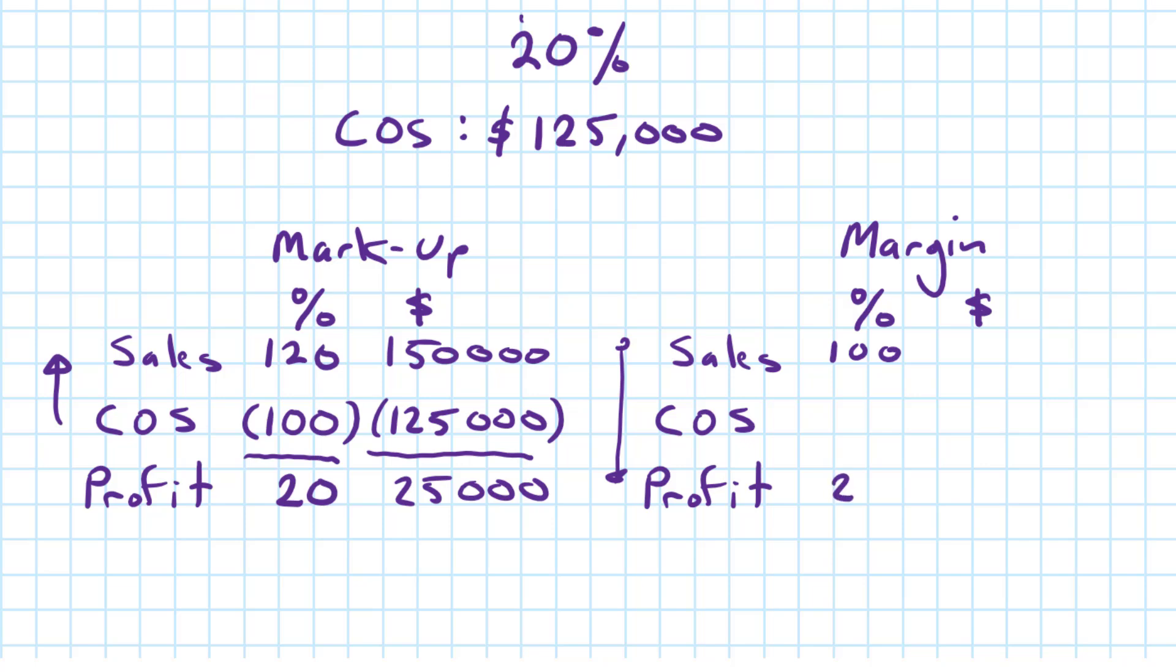So now, 20% of the selling price or of the sales is the profit. So the balancing figure then would be the cost of sales, 80%.